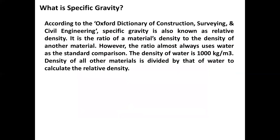What is specific gravity? According to the Oxford Dictionary of Construction Surveying and Civil Engineering, specific gravity is also known as relative density. It is the ratio of a material's density to the density of another material. However, the ratio almost always uses water as the standard comparison. The density of water is 1000 kilograms per cubic meter, and the density of all other materials is divided by that of water to calculate the relative density.